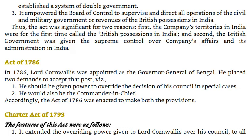Act of 1786. In 1786, Lord Cornwallis was appointed as the Governor-General of Bengal. He placed two demands to accept that post: 1. He should be given power to override the decision of his council in special cases; and 2. He would also be the Commander-in-Chief. Accordingly, the Act of 1786 was enacted to make both these provisions.